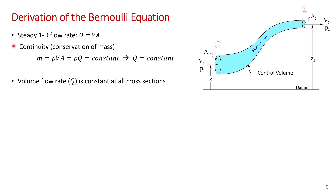From continuity, which is conservation of mass, we have that the mass flow rate m-dot is constant throughout the pipe — at any cross section we have the same mass flow rate. m-dot equals rho times v times A. And since the flow is incompressible, rho is constant, so the volume flow rate is also constant at all cross sections in the pipe.